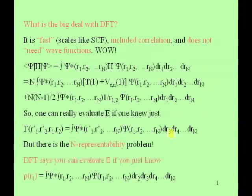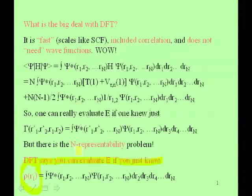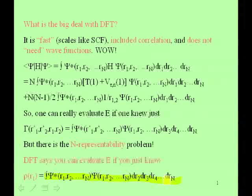Density functional theory is a stronger step away from wave functions than even that. It says: I don't even need the density matrix. I actually just need something called the density. Density functional theory says to evaluate the energy and other properties, you don't need psi, you don't need the density matrices. All you need is rho(R), the electron density at point R,theta,phi. Rho(R) is: take psi-star times psi, integrate out the positions of electrons 2,3,4 up to N, and you're left with where is an electron whose coordinate we're calling R1 — that's the electron density at point R1.